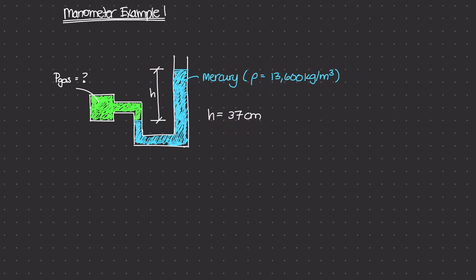This question is asking us to figure out what the pressure of the gas is given this h value and this mass density in the manometer. Now there are a couple of assumptions that we're making: one is that this system is in hydrostatic equilibrium and that the liquid is incompressible.